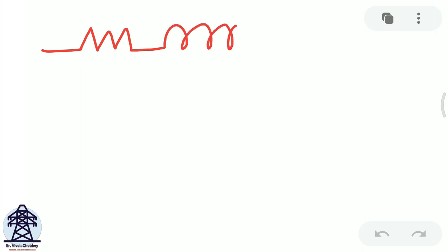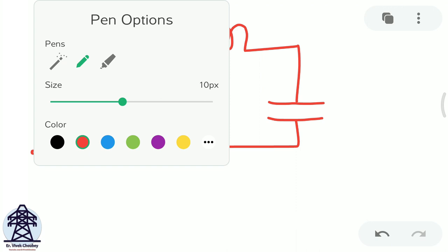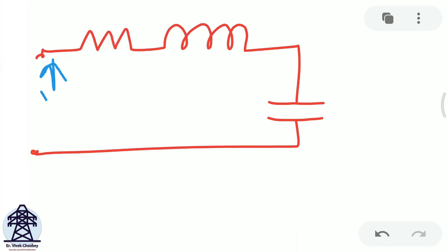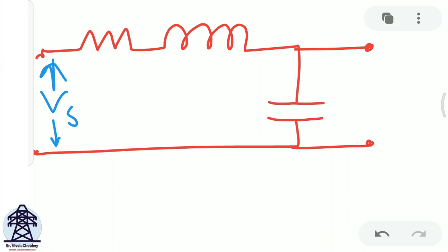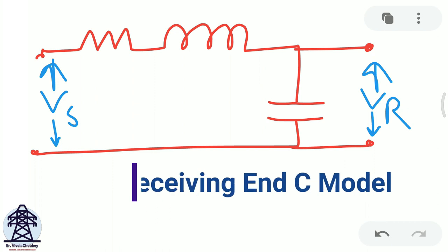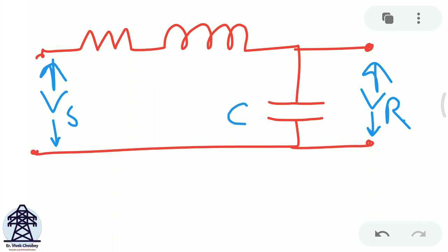A transmission line has resistance, inductance within the line, and a line-to-earth capacitance between the line and the earth. The sending end has voltage VS and the receiving end has voltage VR. This model is called the receiving end C model, because the capacitance C is placed on the receiving end side.